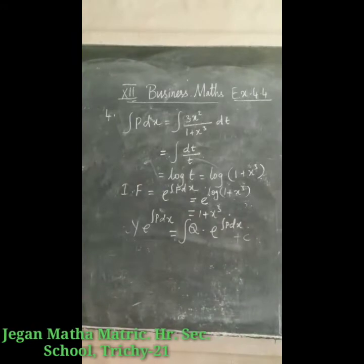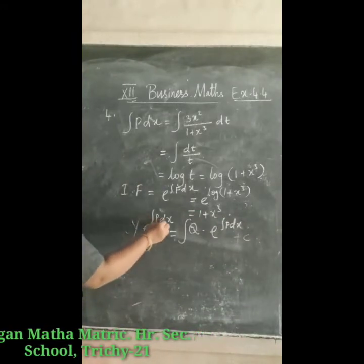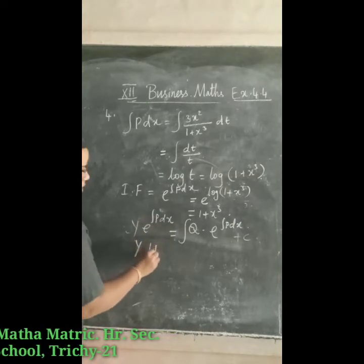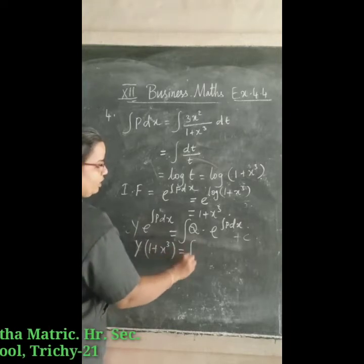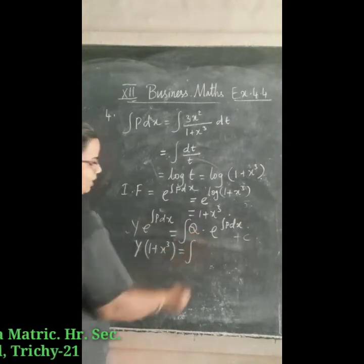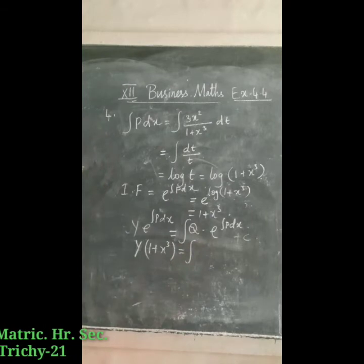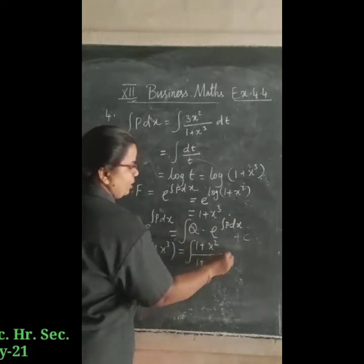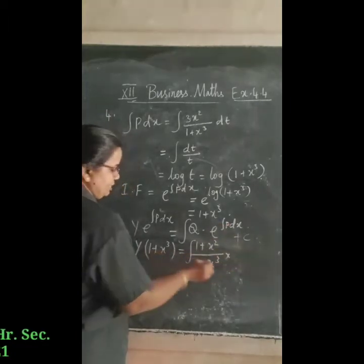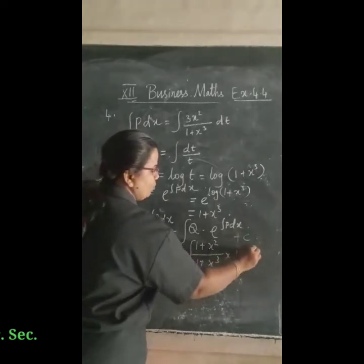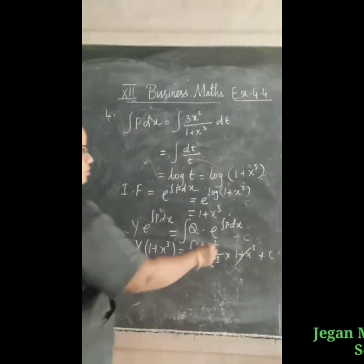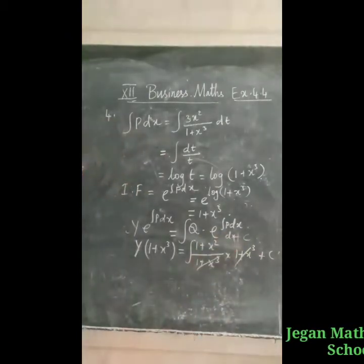Substituting the values, y into (1 + x³) is equal to the integral of q, which is (1 + x²) divided by (1 + x³), multiplied by the integrating factor (1 + x³), into dx plus c. The (1 + x³) terms cancel, giving the integral of (1 + x²) dx plus c.